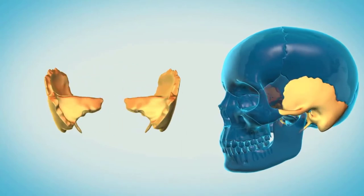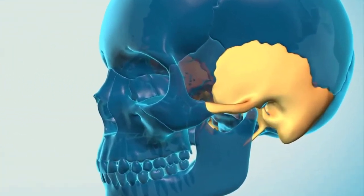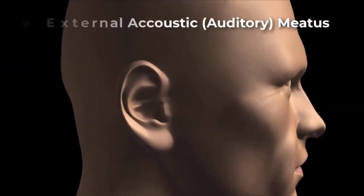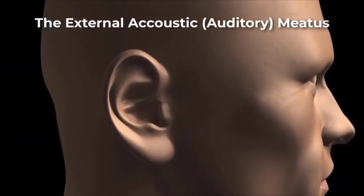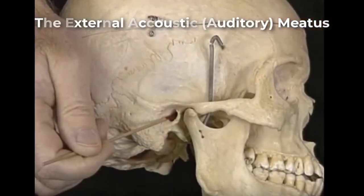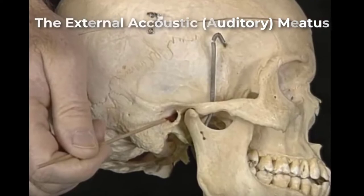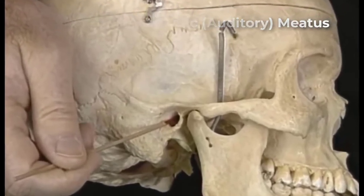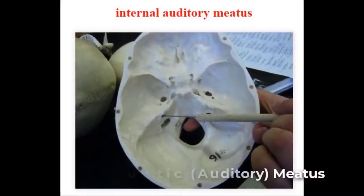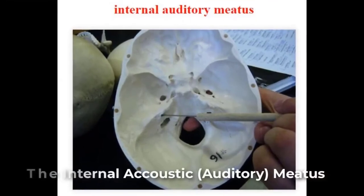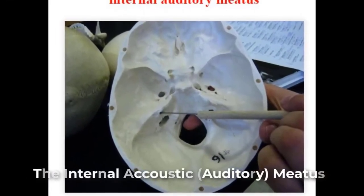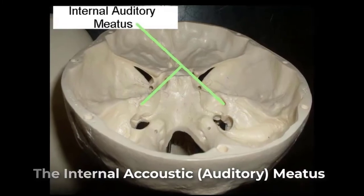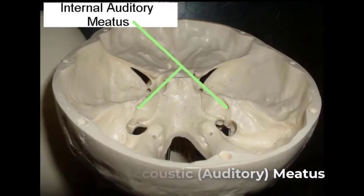The temporal bone contains some important landmarks. The external acoustic meatus, or ear canal, is the large opening located on the lateral side of the skull that is associated with the ear. The internal acoustic meatus is an opening located inside the cranial cavity on the medial side of the petrous ridge.